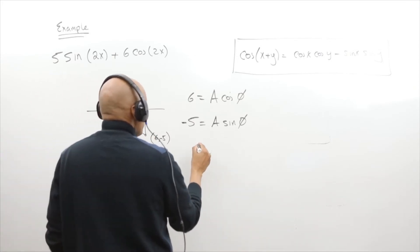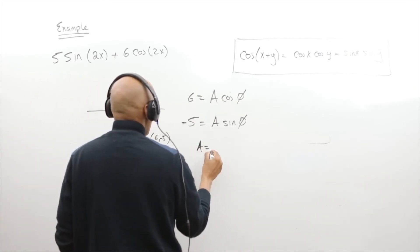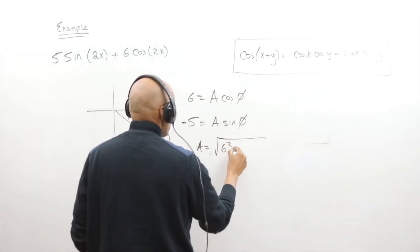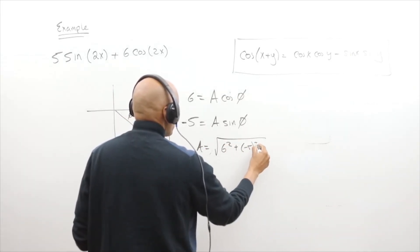So how do you calculate the amplitude? The amplitude is going to be the distance from 6 to the origin, which would be the square root of 6 squared plus negative 5 squared.